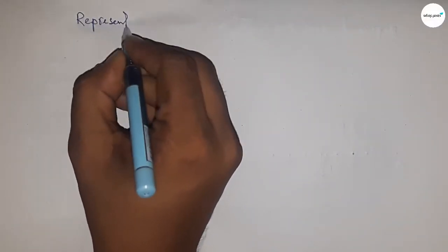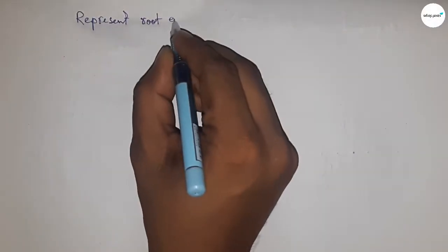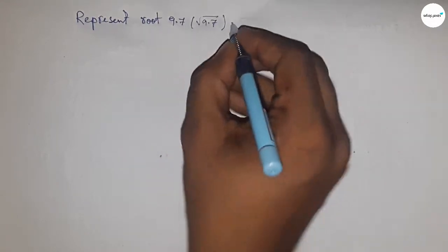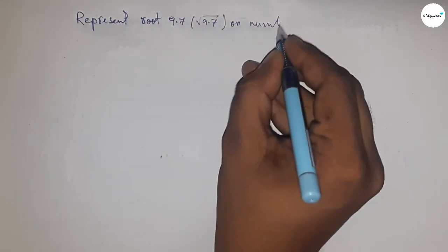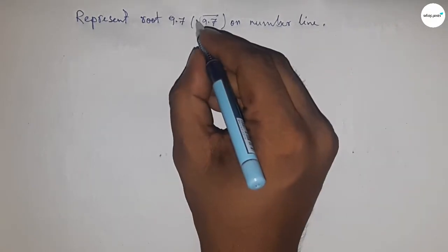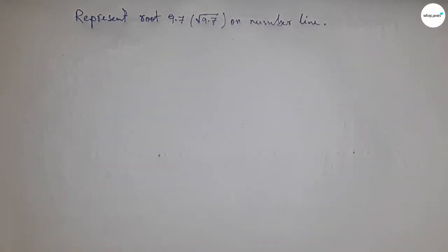Hi everyone, welcome to SSR Classes. Today we're talking about how to represent root 9.7 on a number line. Before starting the video, please subscribe to the channel and press the bell icon for future notifications.